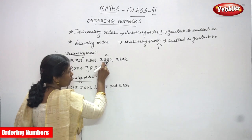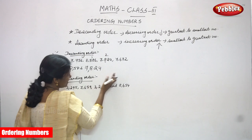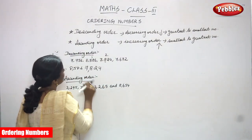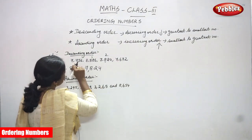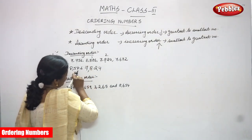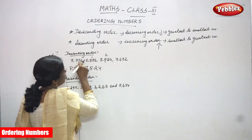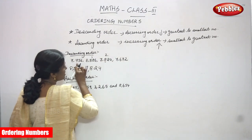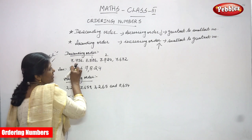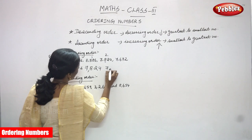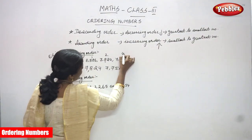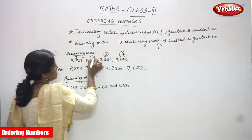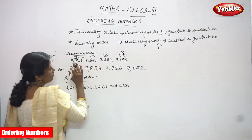We have written 8586 in first place and 7824 in second place. Now we compare the remaining two numbers: 7756 and 7672. Their thousands places are both 7000, so we look at hundreds place — 700 versus 600. Since 700 is greater, 7756 is the third number and 7672 is the smallest, so it comes last.